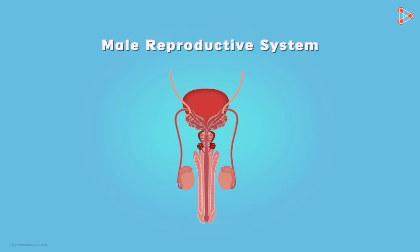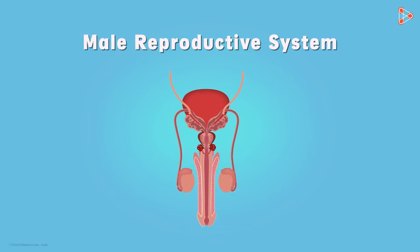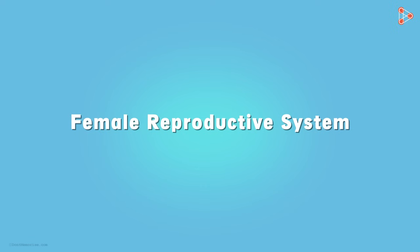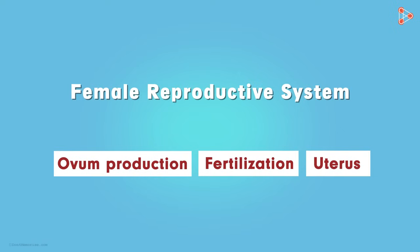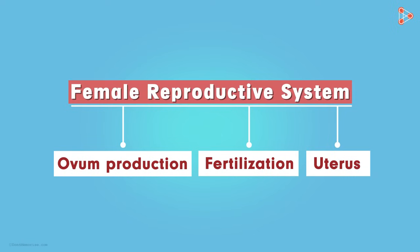We have taken a look at the reproductive system in males. Now before moving on to the process of fertilization, we need to understand the place where this process takes place. I am referring to the female reproductive system. The site of ovum production, fertilization, and the uterus are all a part of the female reproductive system. Let's have a look at this important system in this video.